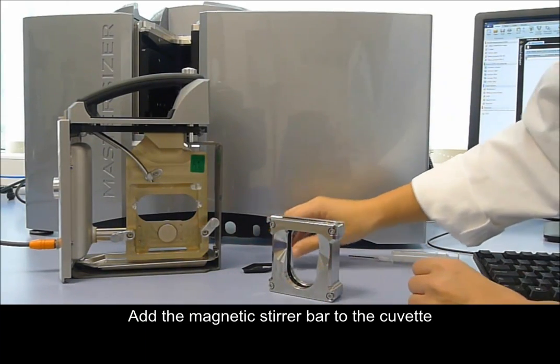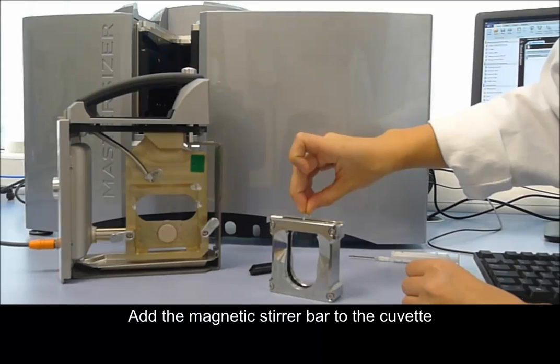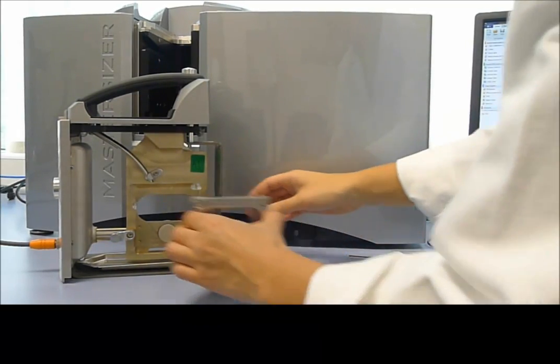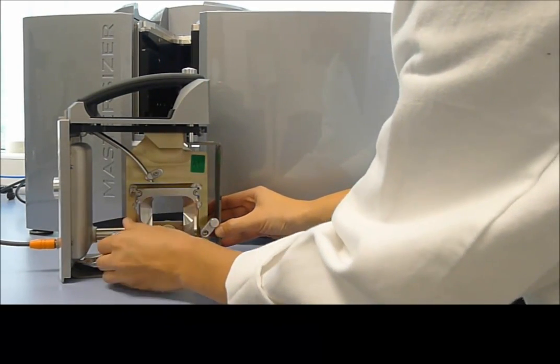Once we have added the dispersant, the next thing is to add the magnetic stirrer bar into the cuvette and then replace the cuvette into the cell holder and lock it into place.